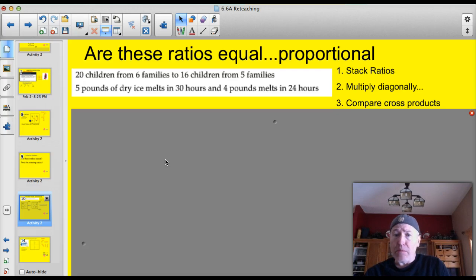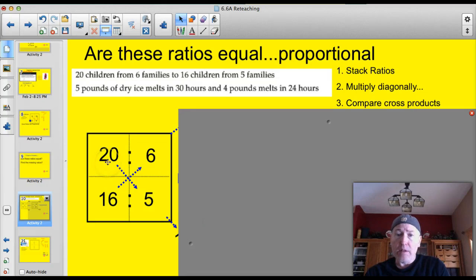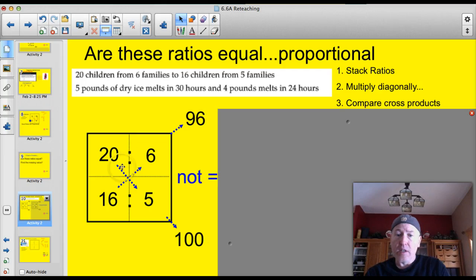Typical of what you'll be asked on testing situations. 20 children from 6 families to 16 children from 5 families. Are these equivalent or are these ratios proportional? So I just set them up. 20 children from 6 families. I stacked them. 16 children from 5 families. I stacked them. Multiply diagonally. 16 times 6 is 96. 20 times 5 is 100. 20 to 6, 16 to 5. These are not equal. They're not proportional.